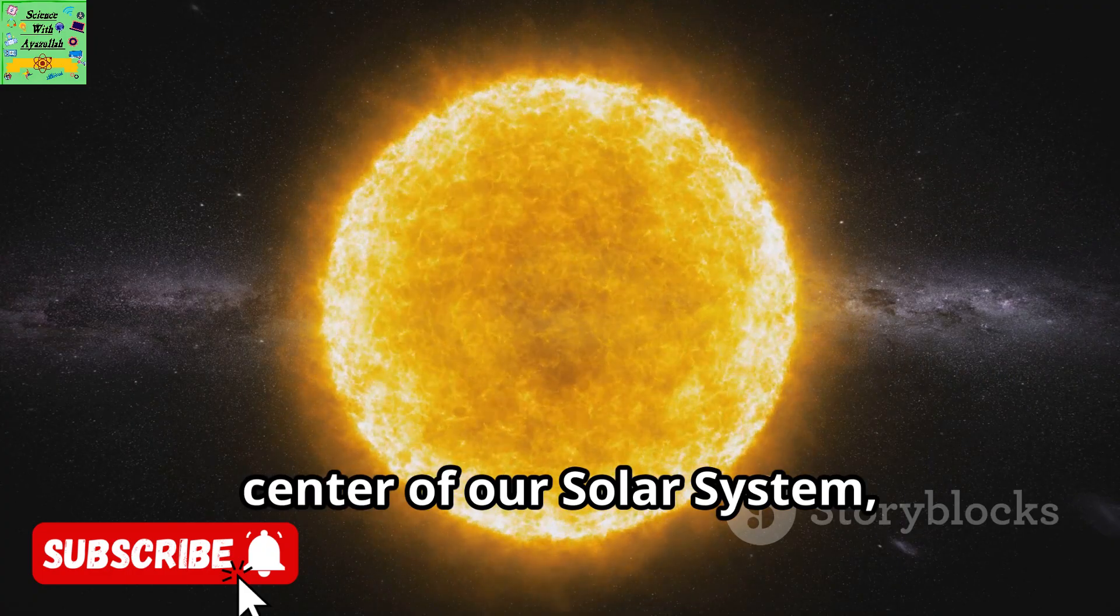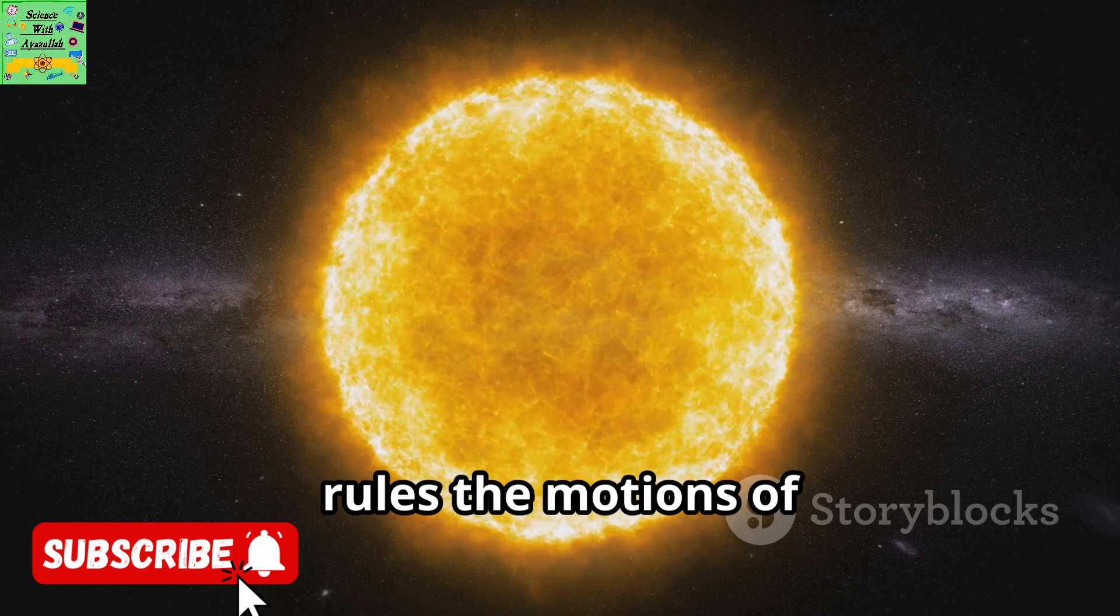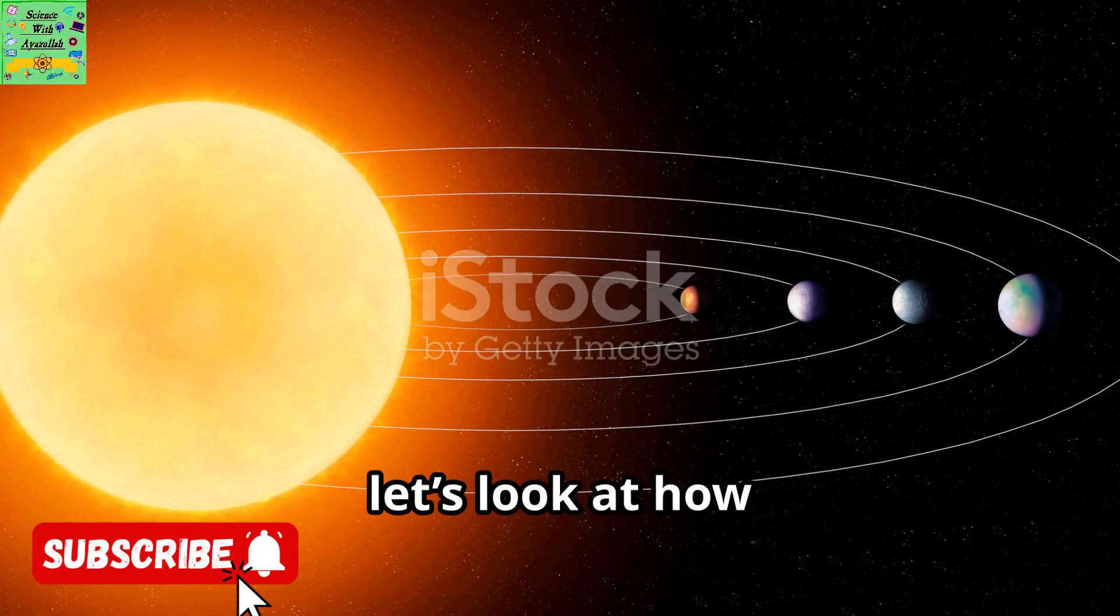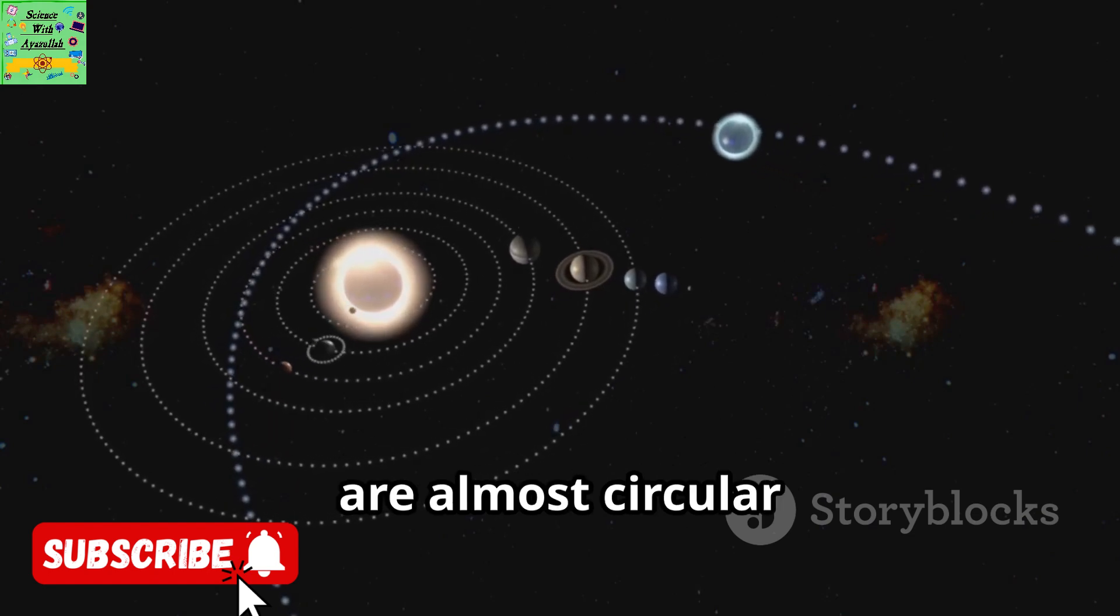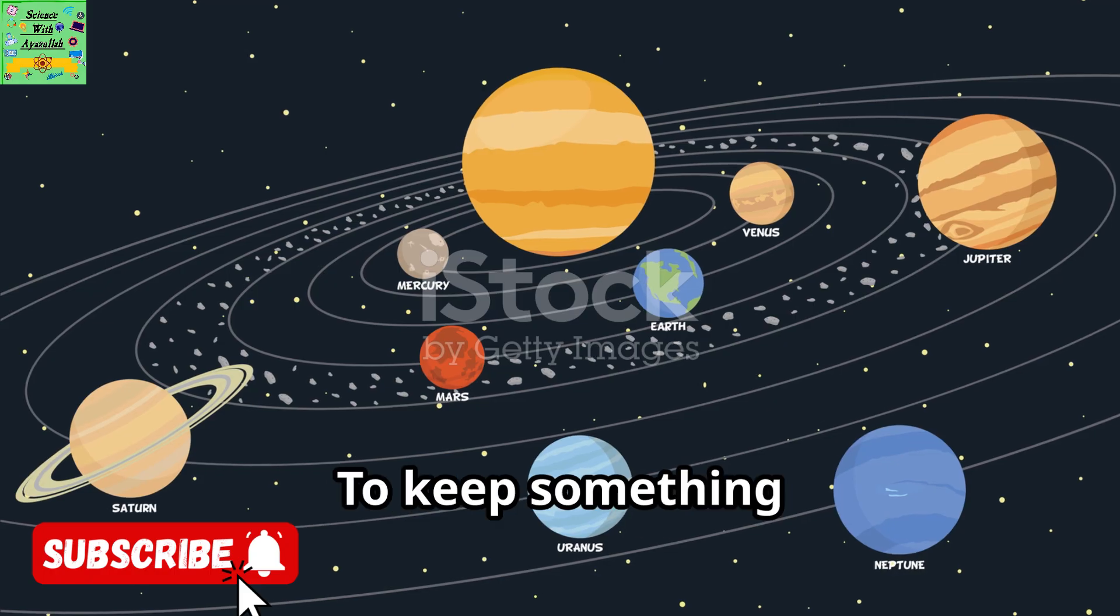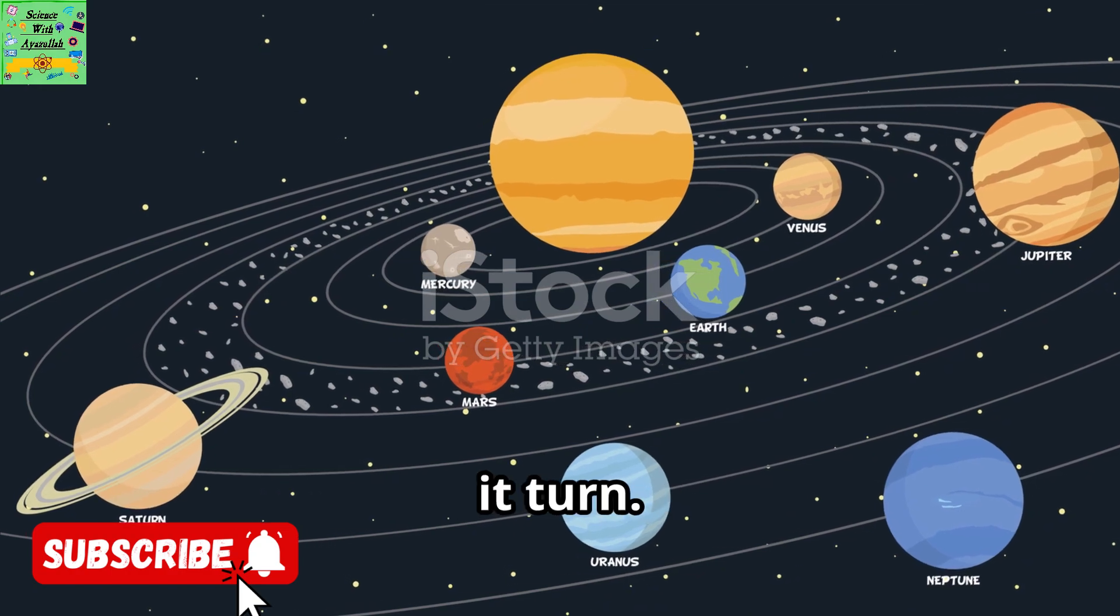You should never look directly at the Sun or try to photograph it yourself. The Sun is the center of our solar system, and its gravity rules the motions of the planets. Next, let's look at how planets orbit the Sun. Planetary orbits are almost circular, nearly the shape of a circle. To keep something moving in a circle, a force must make it turn.